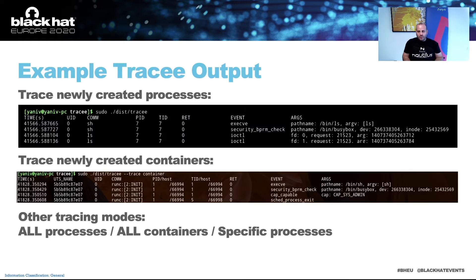Here you can see an example where we start Tracy without any arguments. By default, Tracy will only trace newly created processes, giving a timestamp, user ID, command name, process ID, thread ID, return value if applicable, and the event name and its arguments. The second example shows Tracy in container mode, where regular processes in the system will not be traced at all — instead, when a container is started with Docker, Tracy will detect that and start tracing all of its processes automatically. Tracy is also capable of tracing all processes or containers in the system, or just tracing specific PIDs.